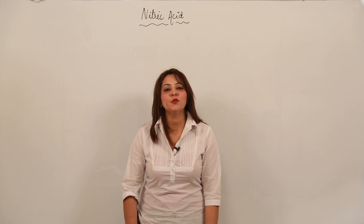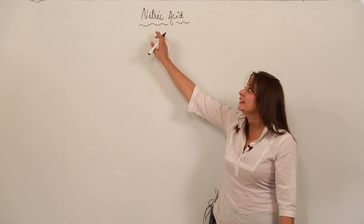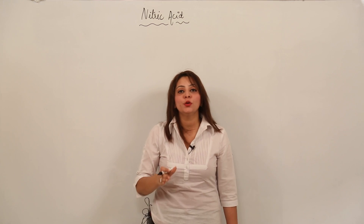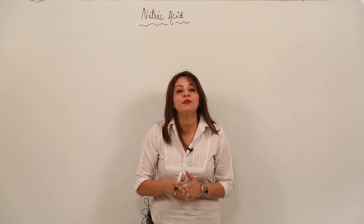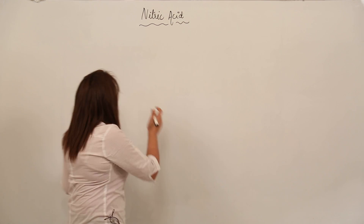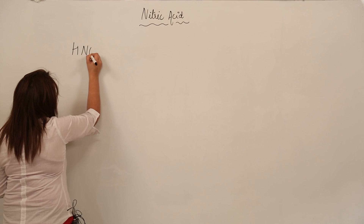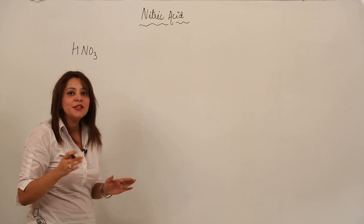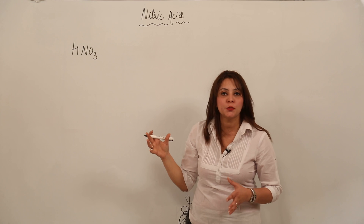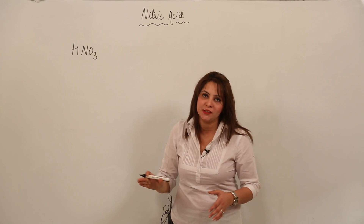Today we are going to start with the detailed study of the organic compound nitric acid. The molecular formula for nitric acid is HNO3, which contains hydrogen, nitrogen, and oxygen.